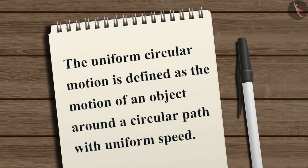Thus the uniform circular motion is defined as the motion of an object around a circular path with uniform speed.